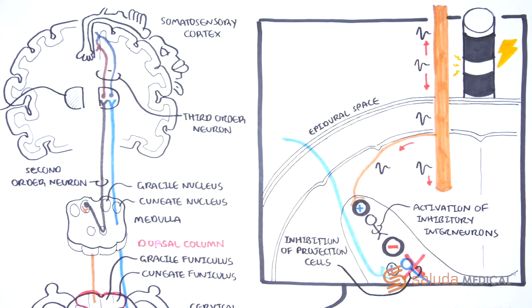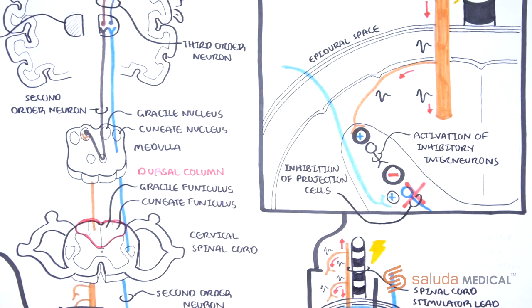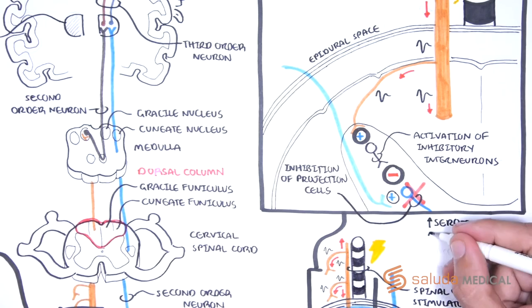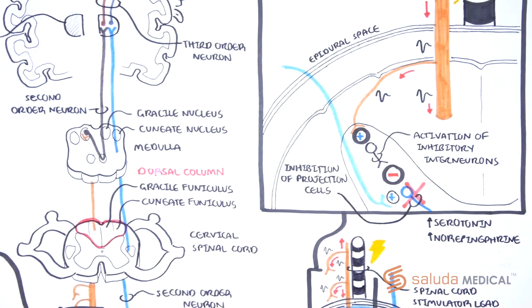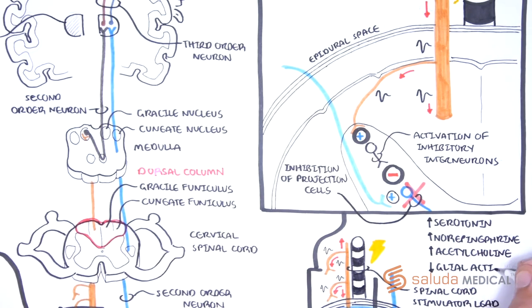The ascending signals that reach the medulla and somatosensory cortex can cause sensation that may also affect descending pain inhibition, as evidenced by increases in the release of serotonin and norepinephrine in the spinal dorsal horn. There is also evidence of increased release of acetylcholine and depression of astrocytes and microglial activity.